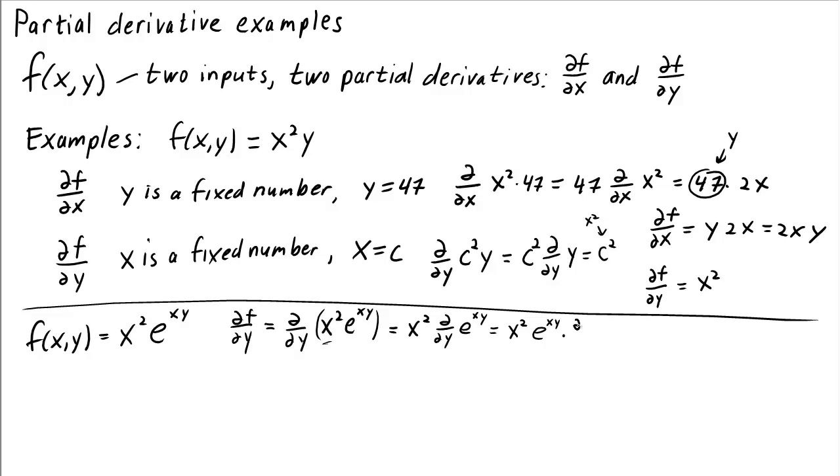Now we need to multiply it by the derivative with respect to y of xy. But since x is just a number, we see that this derivative is just x, because it's x times the derivative of y, which is 1. So df dy is x cubed times e to the xy.